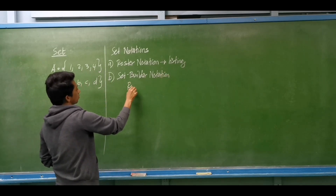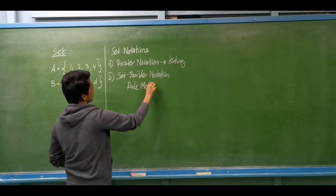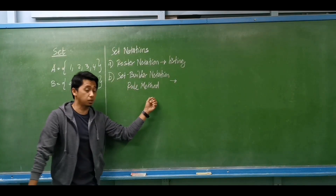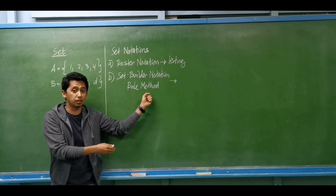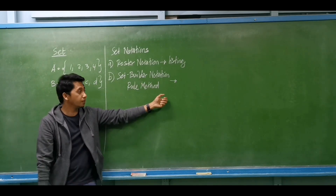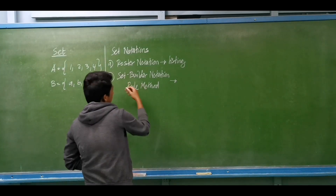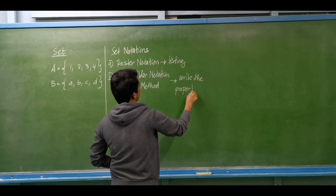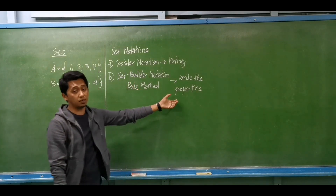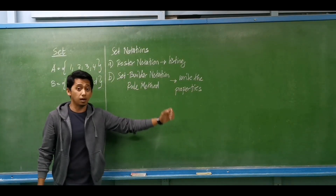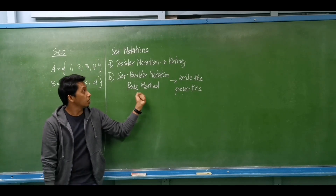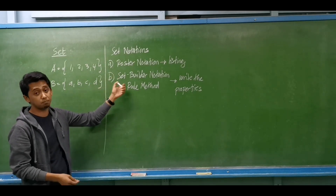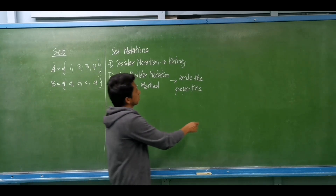Set builder notation is also known as the rule method. For set builder notation or rule method, we need to discuss what are the characteristics of a given element so that that element can be added to a given set. We need to write the properties or details of the given elements to satisfy that the element should belong to a given set. So these are the set notations — roster notation or set builder notation, also known as the rule method.